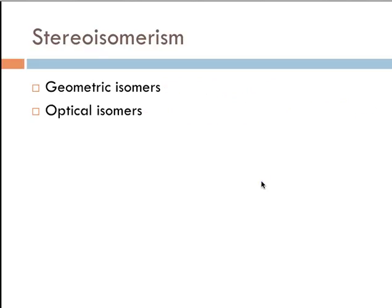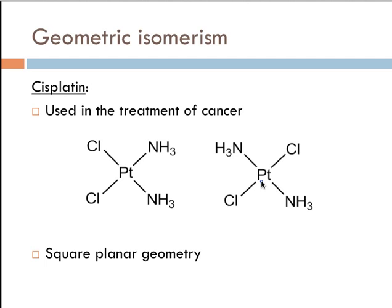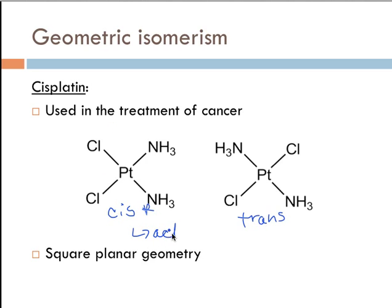The first thing to look at is geometric isomers, and we're going to look specifically at cisplatin. You can see the cis form here with the same groups on the same side. It is a square planar molecule — a transition metal complex ion with an overall neutral charge. This would be your trans isomer, and the cis one is the one that is actually active.